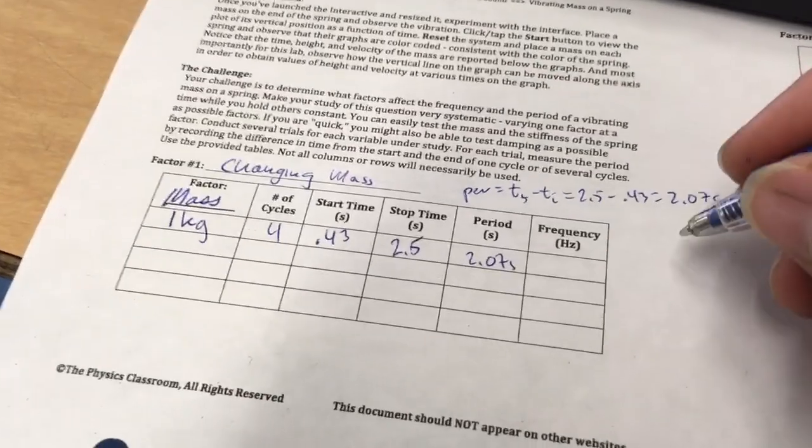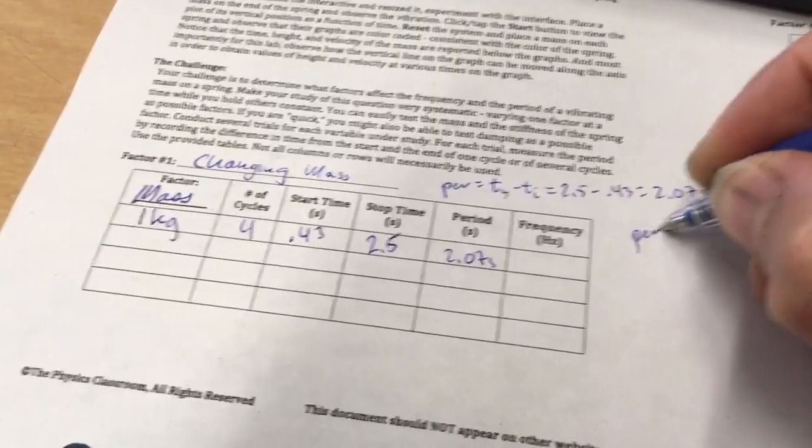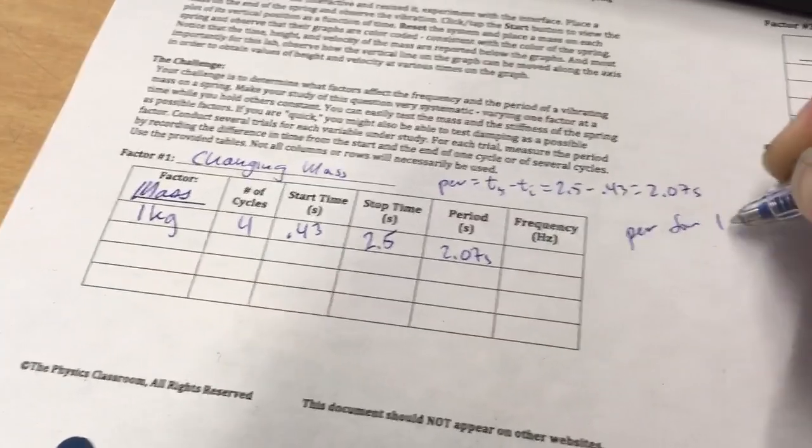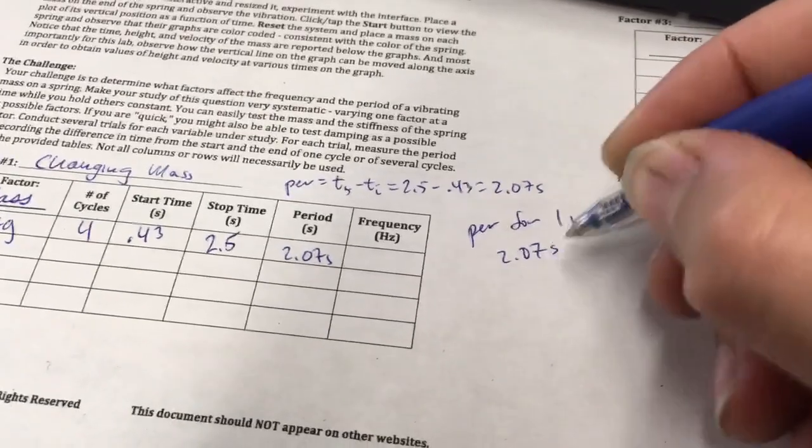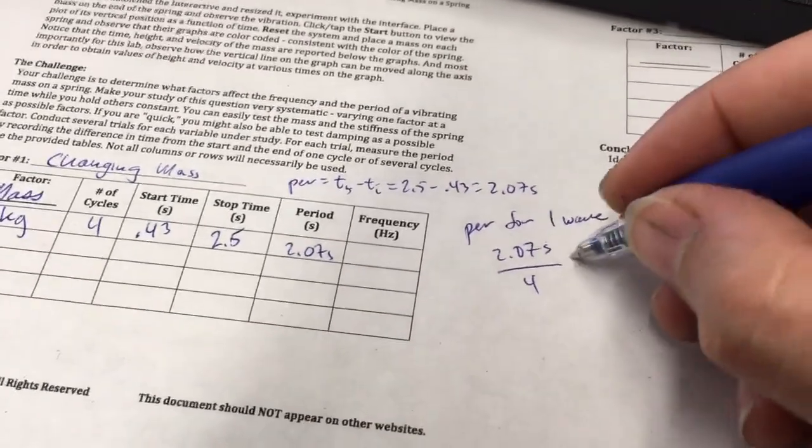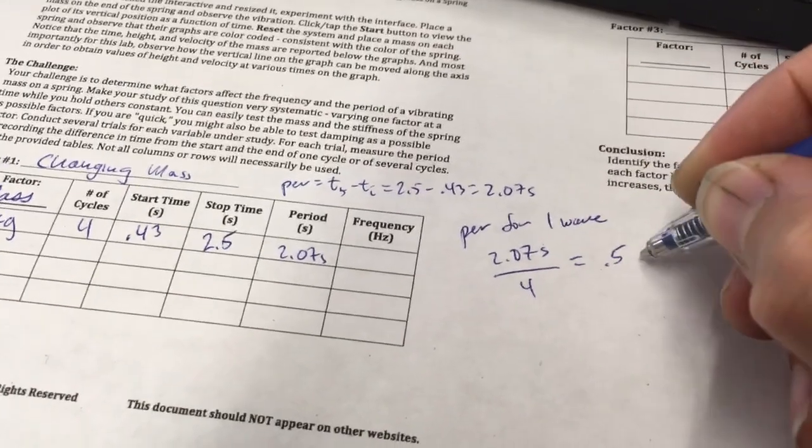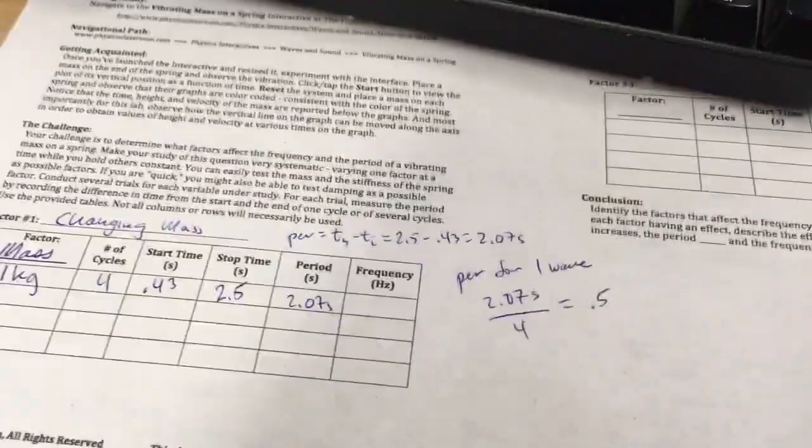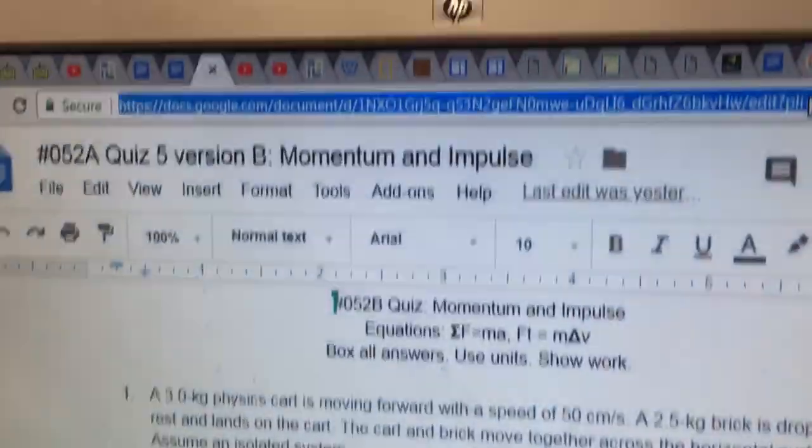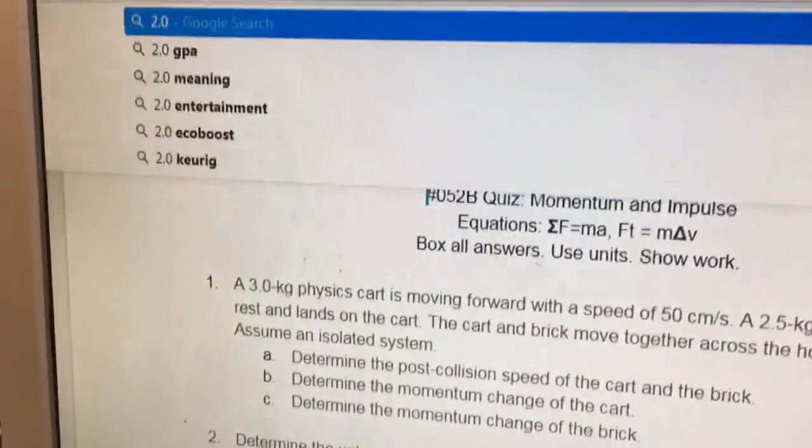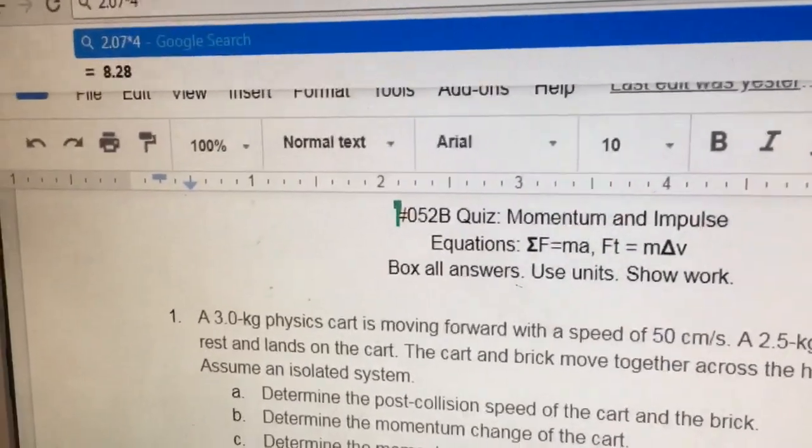So the period for 4 waves was 2.07 seconds. The period, however, for 1 wave is not 2.07 seconds. So let me figure out the period for 1 wave. So that's going to be 2.07 seconds divided by the 4 waves. And so that is going to be, let's see, 2.07 divided by 4.